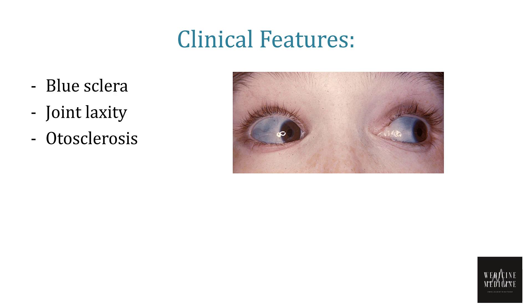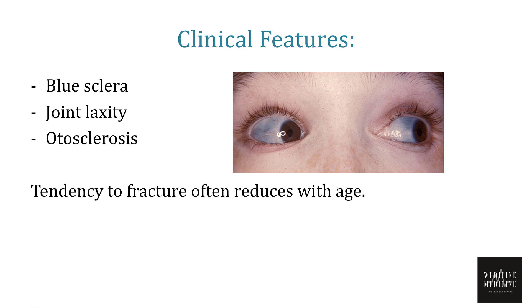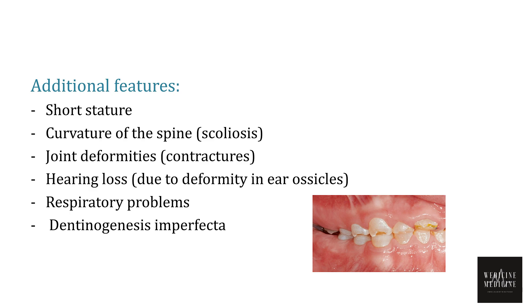Apart from weak and fragile bones, this condition is associated with other features such as blue sclera, joint laxity, and otosclerosis. One thing to note is that the tendency to fracture often reduces with age. Respiratory problems are seen more with severe forms of osteogenesis imperfecta, in which there is an abnormally small, fragile rib cage and underdeveloped lungs, particularly seen in infants.